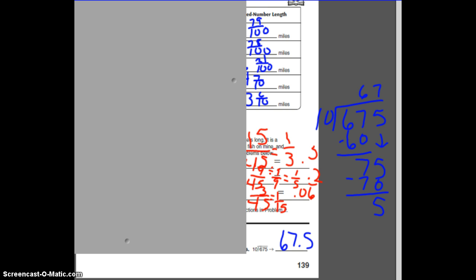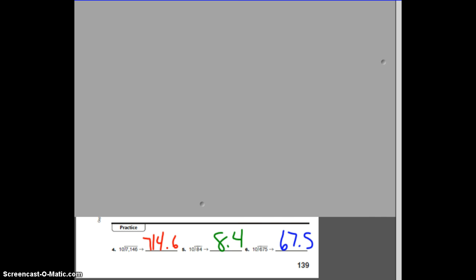Now, this is the way the book has us do it. But as I'm looking at this, 5th graders, I want you to see if you can notice a pattern, so you don't have to do all that actual dividing. Do you notice something here, kids? Do you notice that this is 7146? And this is 7146. This one is 84. This one has 84. This one has 675. 675.